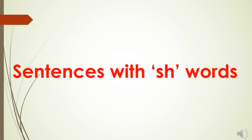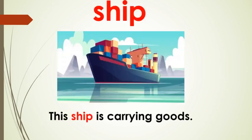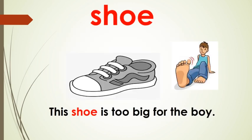We have already learnt the words beginning with the 'Sh' sound. Now we will see how we can use these words in various sentences. Look at the ship — what can you see there? You can see goods. So we can use the word ship in a sentence like: 'This ship is carrying goods.' Let us use the word shoe in a sentence. Look at the shoe and look at the boy's foot also. Don't you feel the shoe is bigger than the boy's foot? So we can use the word shoe in a sentence: 'This shoe is too big for the boy.'